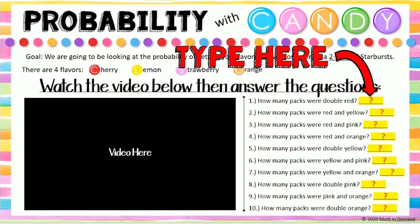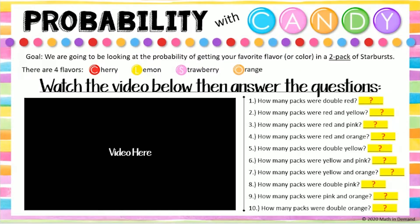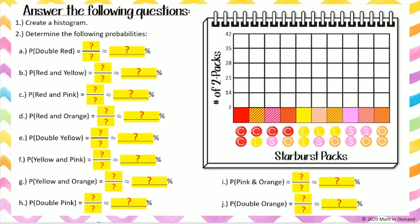You will need to type this information in the Google Slides activity that was given to you. Open up your Google Slides and fill in the information on the first page for problems number one through ten. On the second page, you will determine the probability of getting a certain pair of Starburst — this is where you will be doing some calculations.